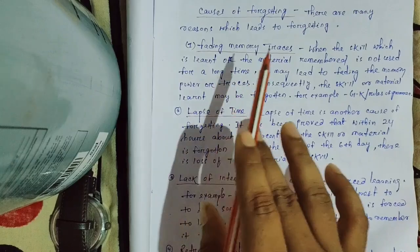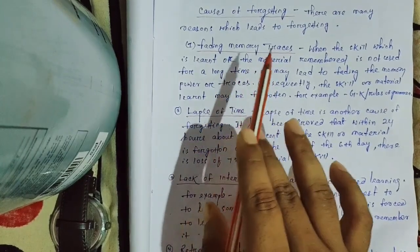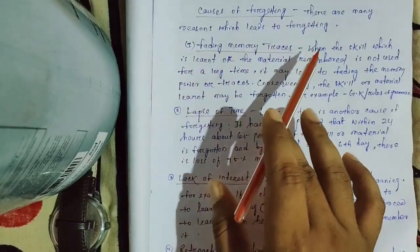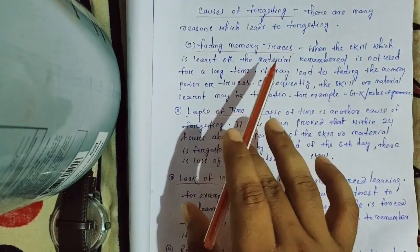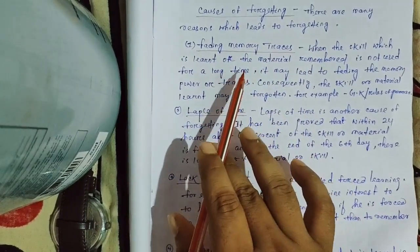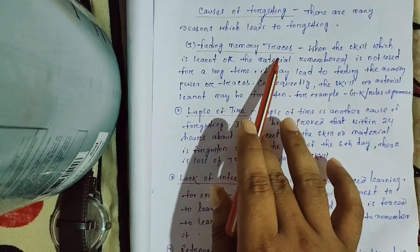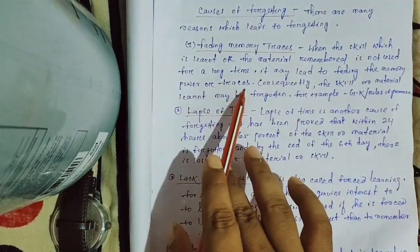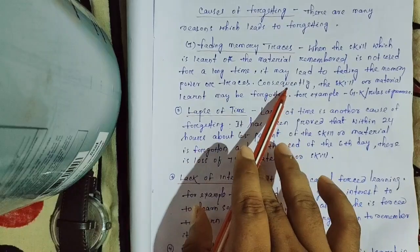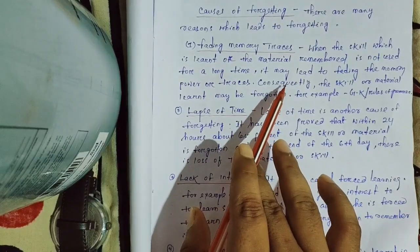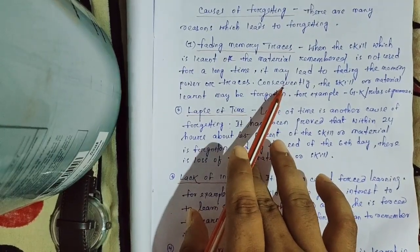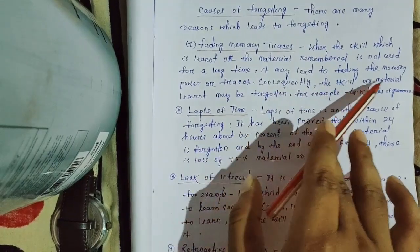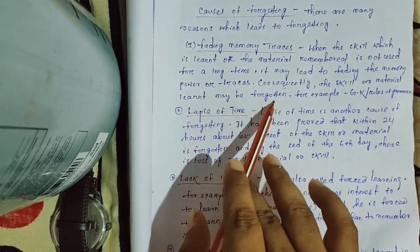For example, if you have studied five books — mathematics and other subjects — and over the long term you cannot retain them, that is the sign of fading memory traces. It may lead to fading of memory power or traces, and consequently the skill or material learned may be forgotten.